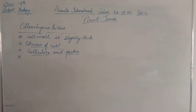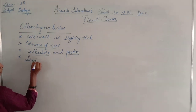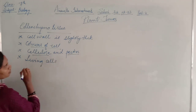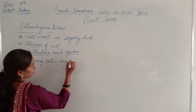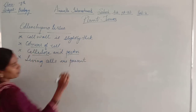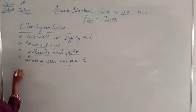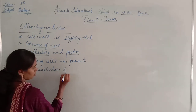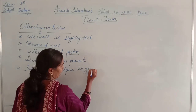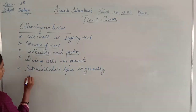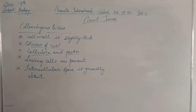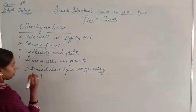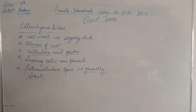What kind of cells are present in collenchyma tissue? Living cells are present in collenchyma tissue. What about the intercellular space? The intercellular space is generally absent — though not completely absent; it may be present in small amounts.